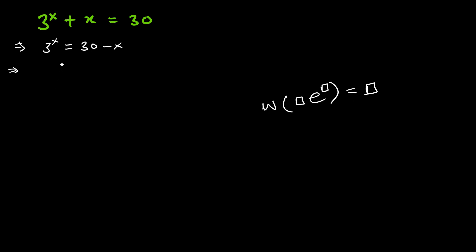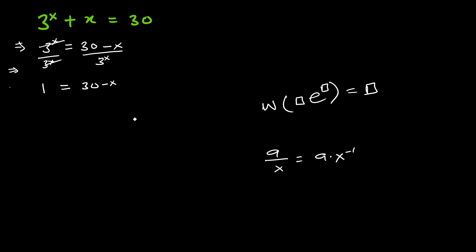We want to send everything to one side and adjust it so we can apply the Lambert W function. Let's divide both sides by 3 raised to x, so the left side becomes 1, and we get 1 equals 30 minus x times 3 raised to negative x.